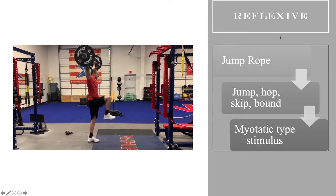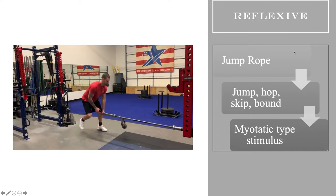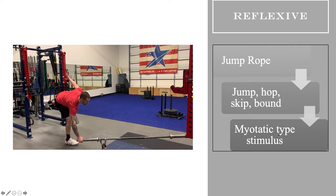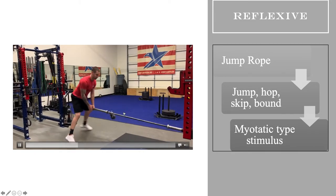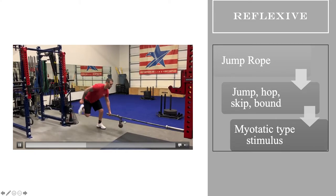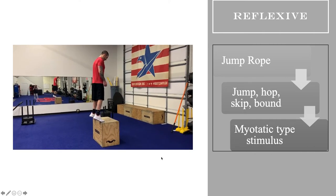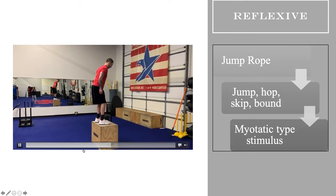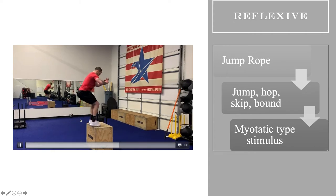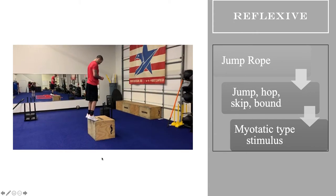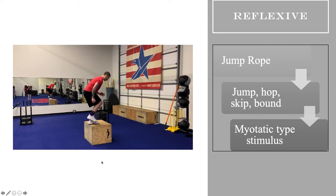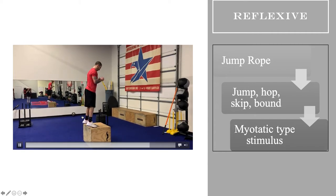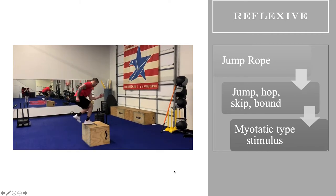Looking at reflexive properties: basics are jump rope, any kind of bounding, hopping, skipping, jumping — anything with a myotatic-type stimulus. A good example of that myotatic stimulus: an oscillation or perturbation here with a kettlebell going into a linear or lateral bound. For rate of force development and amortization — the ability to load, absorb, and express — a great posterior leg chain, calf-Achilles-ankle complex movement, taken to a single leg. You can also just use a regular depth jump or countermovement jump for the same training effect.